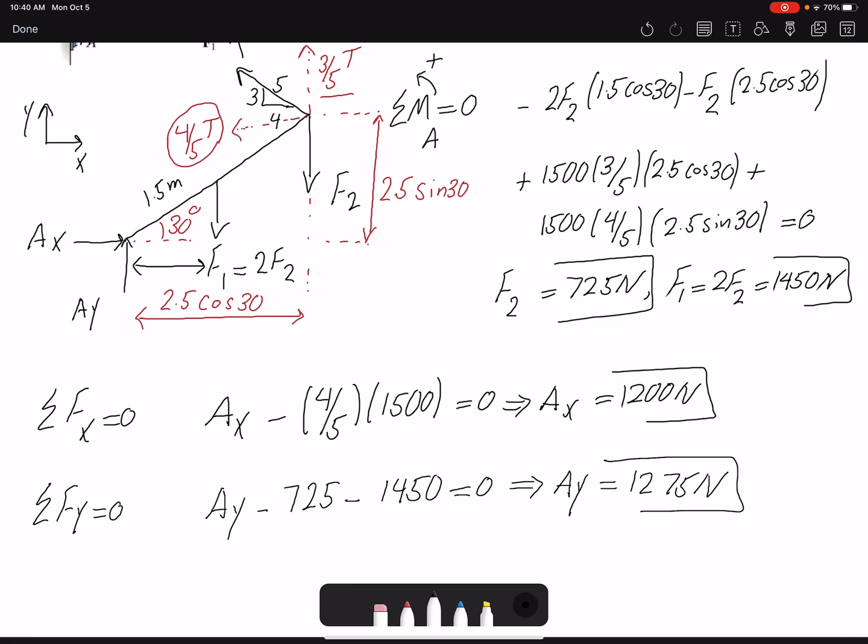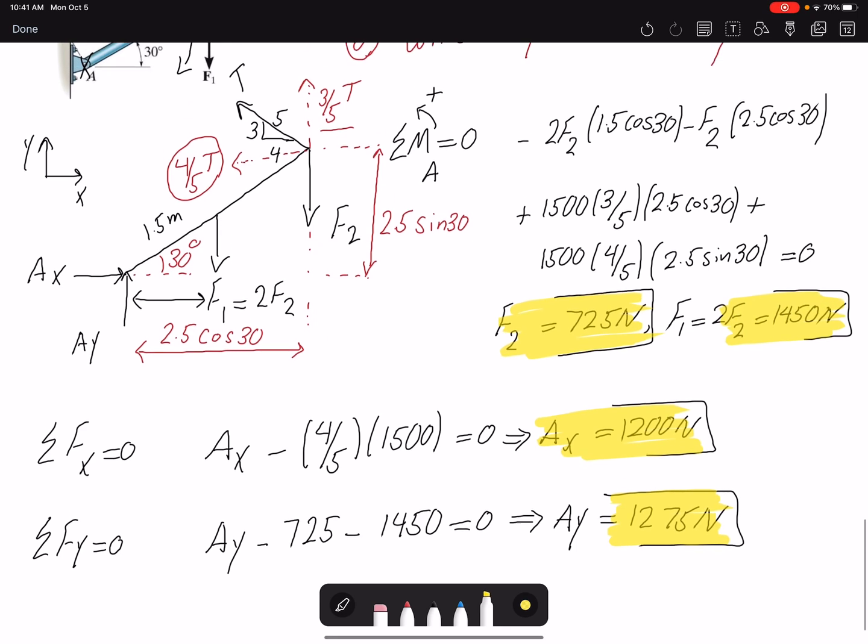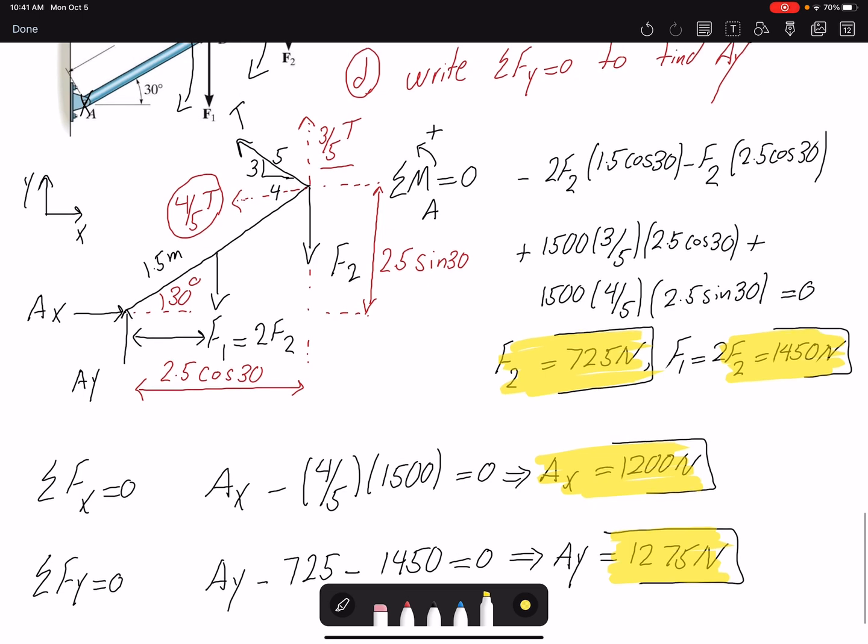All the reaction forces that I found are positive, that means that the direction that I assumed is correct. The question was asking for Ay, Ax, F2, F1, and we found all the unknowns. Remember here we did not have four unknowns: F1 and F2, there is a relation between the two. If we had four unknowns we could not solve this problem because you only have three equilibrium equations.